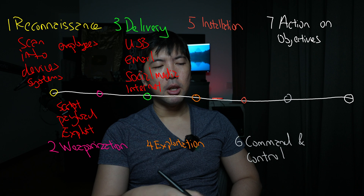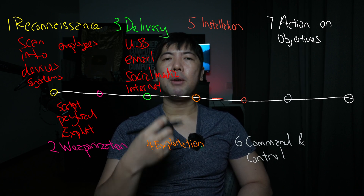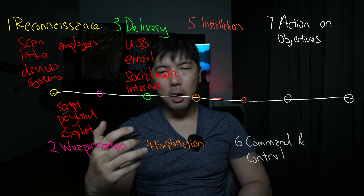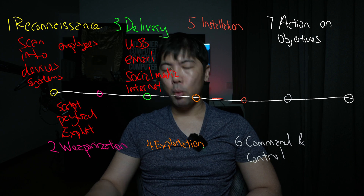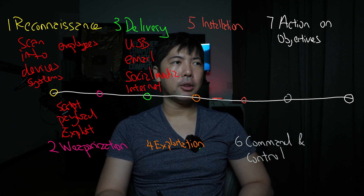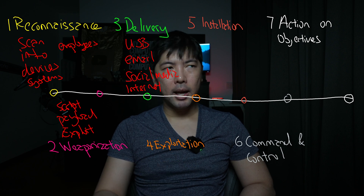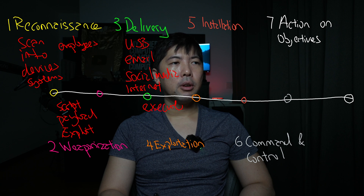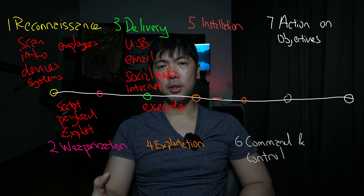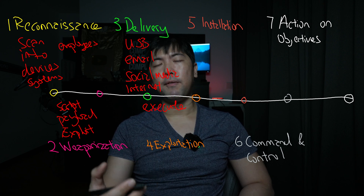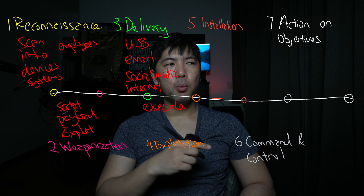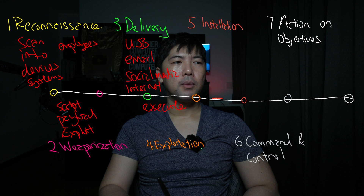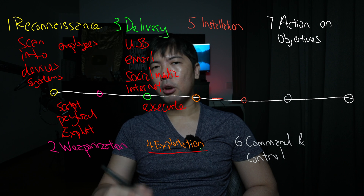For example, if an organization runs web servers with a vulnerability, a specific payload can be sent to hijack the system. In the Exploitation phase, the malicious code created during weaponization — delivered via internet, email, or USB — now gets executed. This could exploit an unpatched service, an unpatched vulnerability, or a misconfiguration.